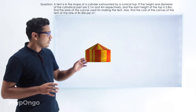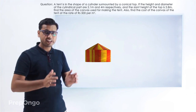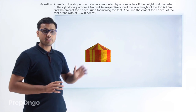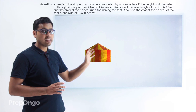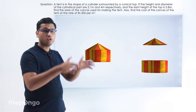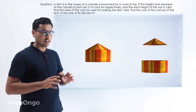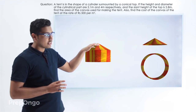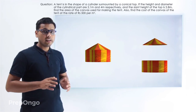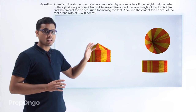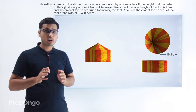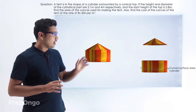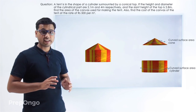If we analyze this question, we have a tent here which has a cylindrical base and a cone surmounted on the top. This tent can be easily broken into a cylinder and a conical top. If you observe, the base and the top of the cylinder are hollow, since no canvas is used there. Similarly, the base of the cone is also hollow — there is no canvas used in the base of this cone. So all we have to find out is the curved surface area of the cylinder and the curved surface area of the conical tent.